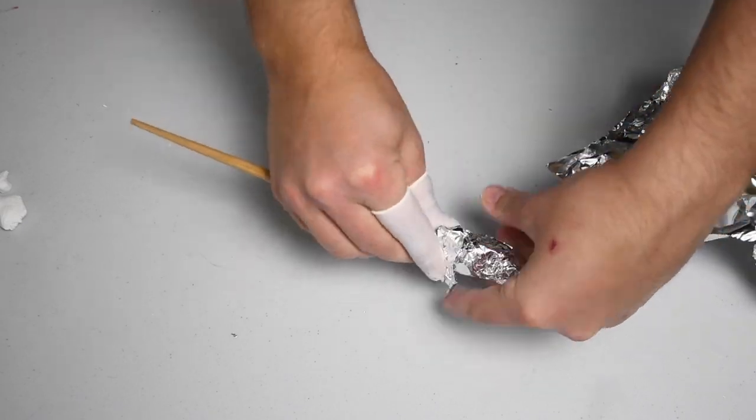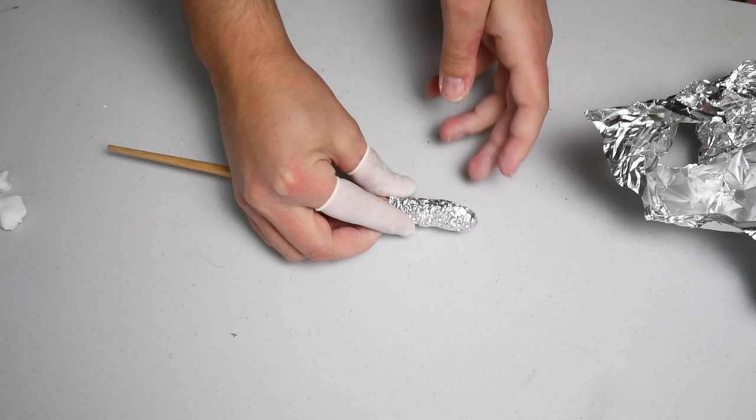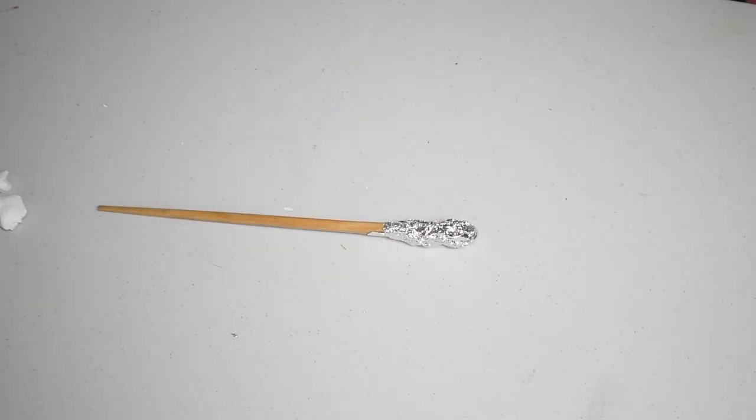First you take some tin foil and wrap it at the top of the chopstick like so. You want to make sure it's nice and tight on there.